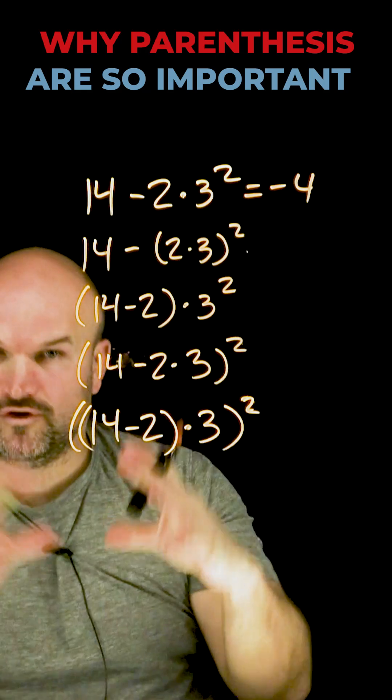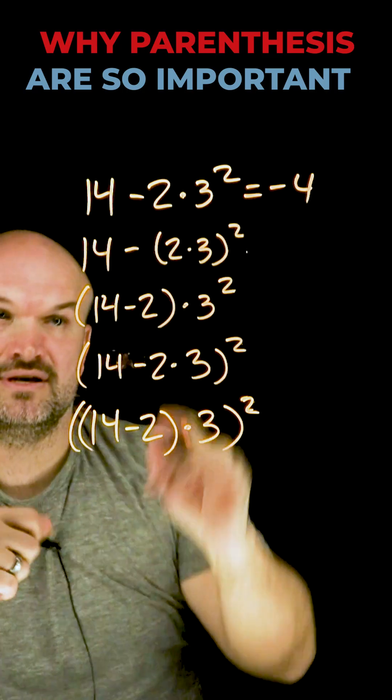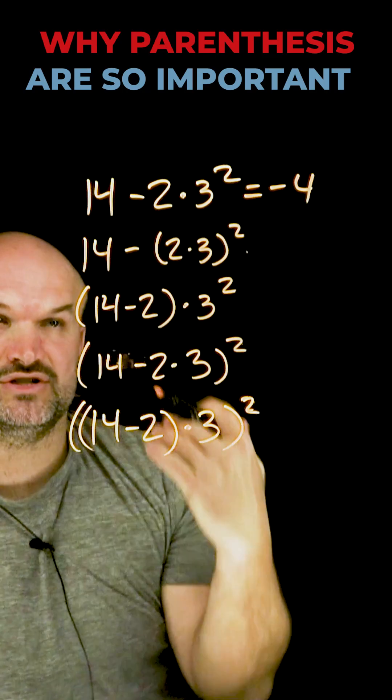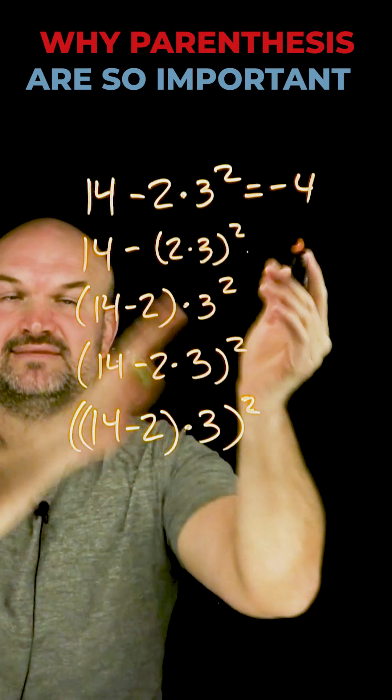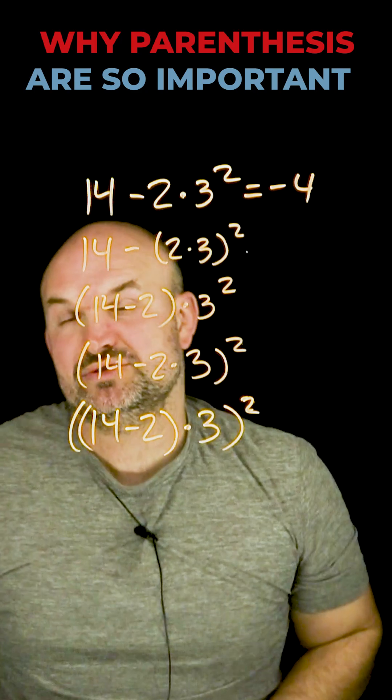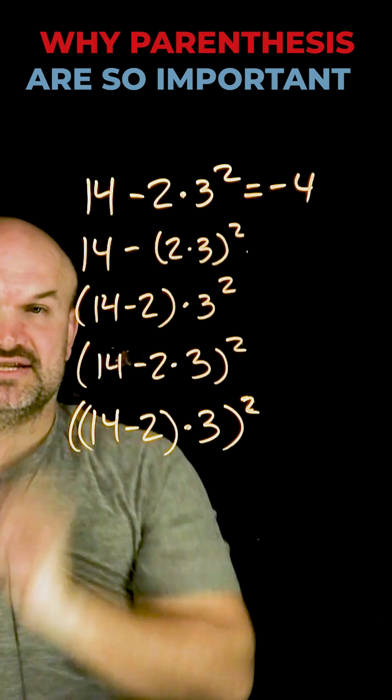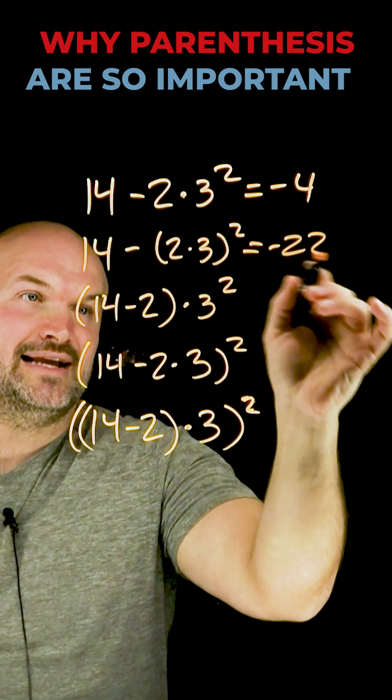Now I have these parentheses telling me to focus on inside the parentheses first. So in this case, I have two times three, which is six. Now I can square the six before subtracting. So six squared is 36. 14 minus 36 equals negative 22.